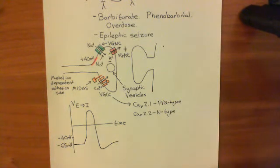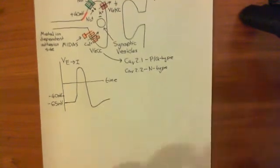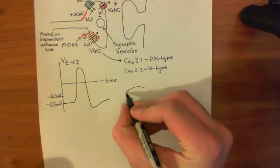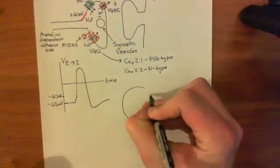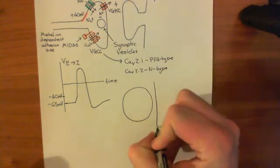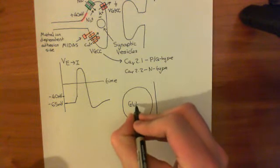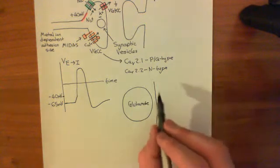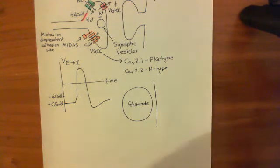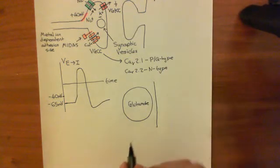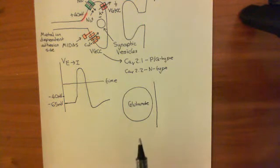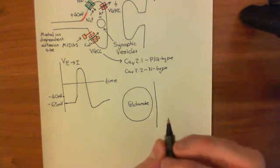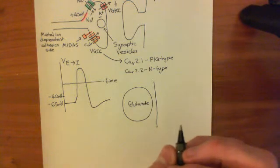Let's briefly revise how calcium induces fusion. We have a synaptic vesicle containing glutamate docked at the membrane. This involves a bunch of proteins all interacting to hold the synaptic vesicle close to the membrane — these proteins are called SNARE proteins.